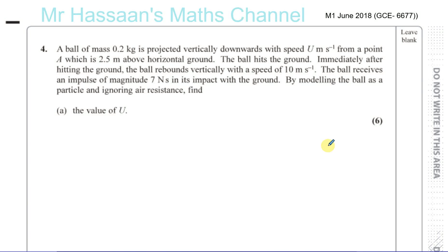Now for question number four from M1, June 2018, the GCE paper, which has the code 6677. A ball of mass 0.2 kilograms is projected vertically downwards with a speed u meters per second from a point A, which is 2.5 meters above horizontal ground.